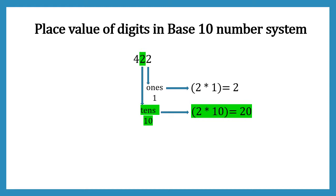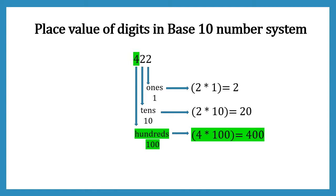We have seen when we were looking at the face value, the face value were 2 for both of the 2's, but place value is different as per their placement. If we look at the extreme left digit which is 4, it is at 100's place, so its place value will be 4 into 100 which is 400.